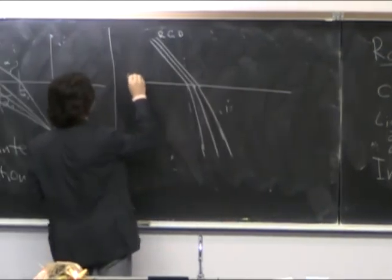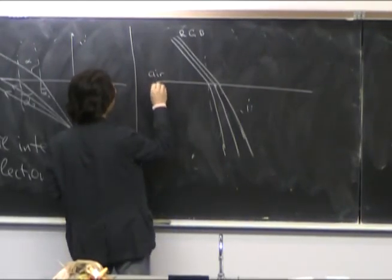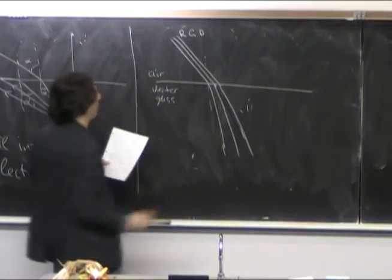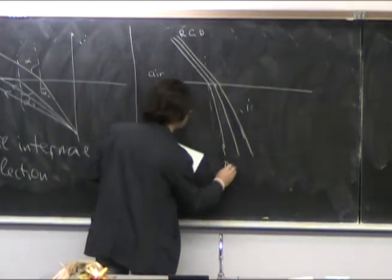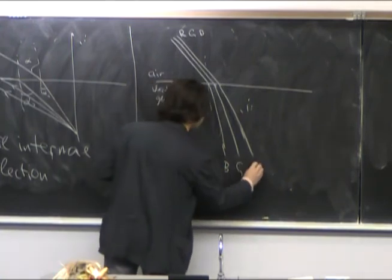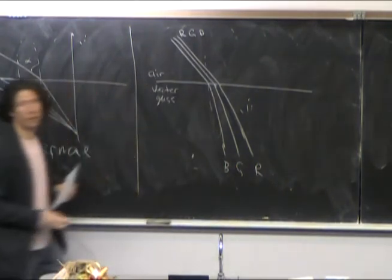So, for example, this is air and this is water or glass. Then blue, green, and red will deflect by different angles.